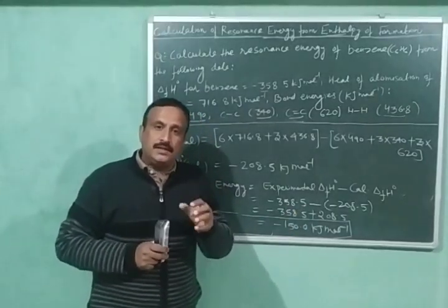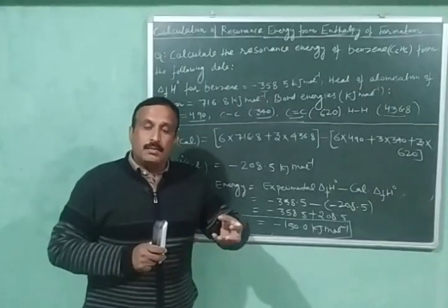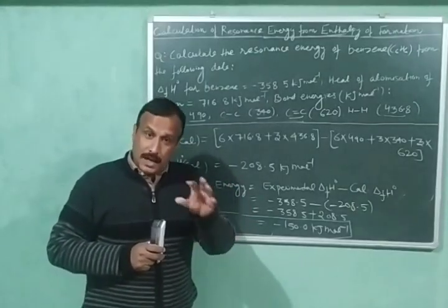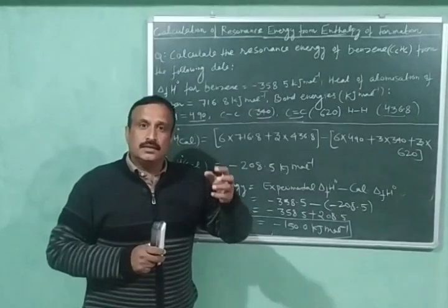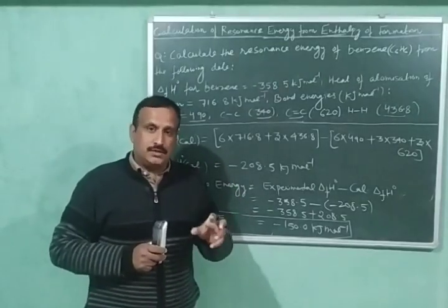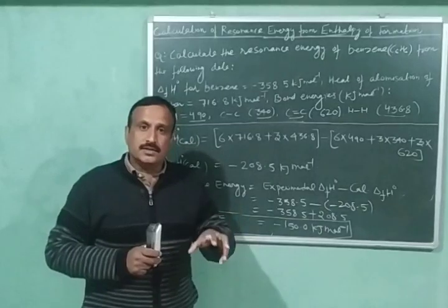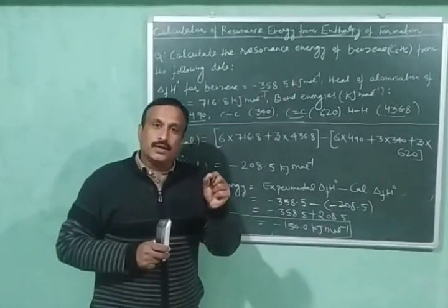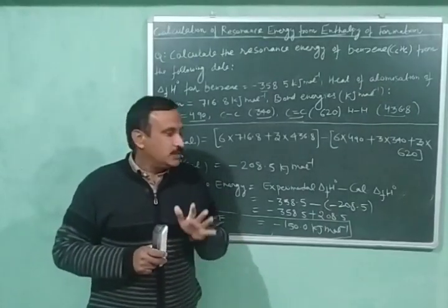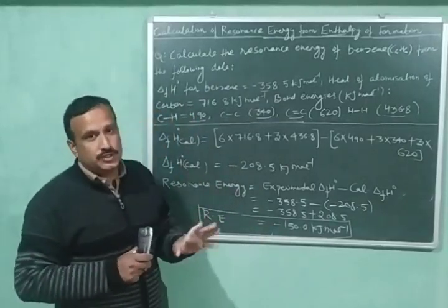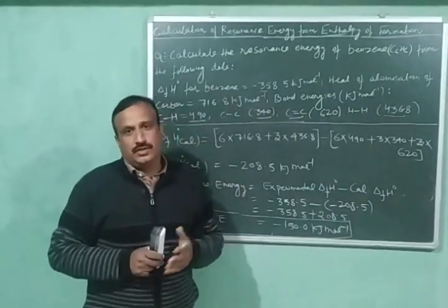I have seen in some books that this resonance energy is given a positive sign, calculated by subtracting the energy of the resonance hybrid from the energy of the more stable contributing structure — this is found in organic chemistry books. The magnitude is the same, so the sign hardly matters. This is all about the calculation of resonance energy from enthalpy of formation. Keep watching, like and share my videos, and subscribe to my channel. Thank you very much.